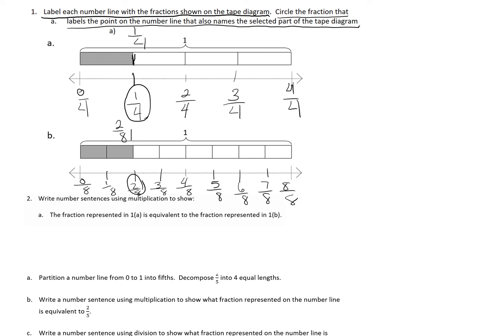It says write a number sentence using multiplication to show the fraction represented in 1A is equivalent to the fraction represented in 1B. We have to use multiplication, so we set up our number sentence. 1 fourth equals 1 fourth multiplied by something is going to equal 2 eighths. 1 times 2 is 2, and what you do on the top, you have to do on the bottom. I know that's right because 4 times 2 is 8.